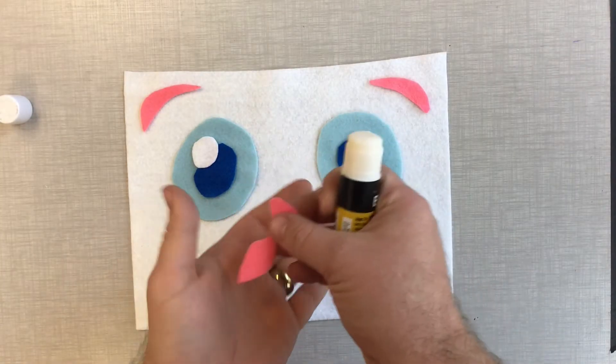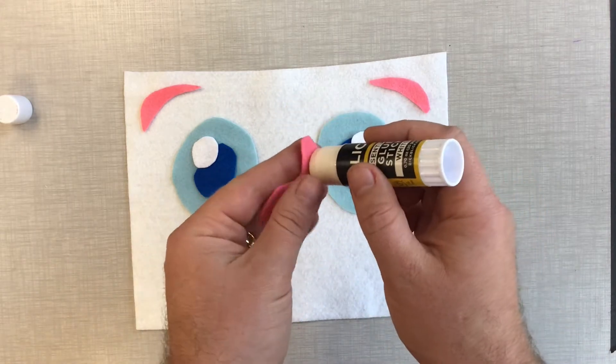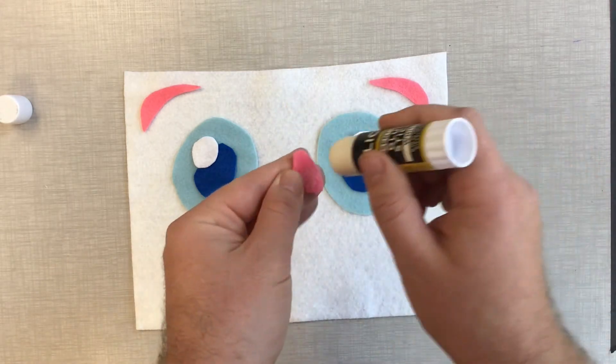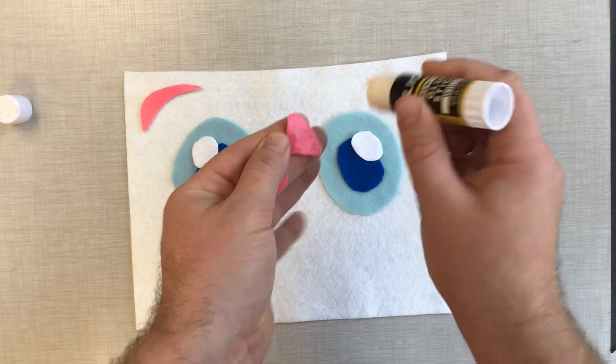Once you have all your pieces cut out, go ahead and lay them out so you can see the future. And then you're going to start gluing them down.